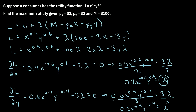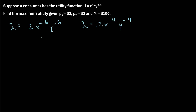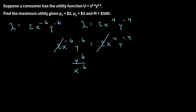We've now solved for lambda two different ways, so we can set these two expressions equal to each other. Both expressions have a 0.2, so those cancel. Rewriting with negative exponents in the denominator: y^0.6 / x^0.6 = x^0.4 / y^0.4. Cross-multiplying gives y^0.6 times y^0.4 = x^0.6 times x^0.4, which simplifies to y = x. So the quantity consumed of y equals the quantity consumed of x.